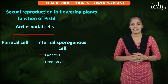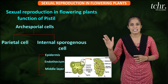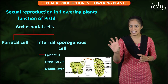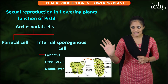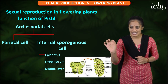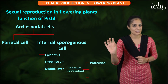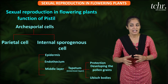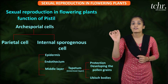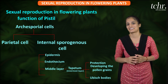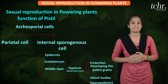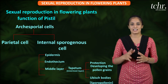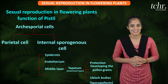The third layer is the middle layer, which is multi-layered — one to six layers — and is nutritive in nature. The innermost layer surrounding the sporangium is called the tapetum. The tapetum is very important: it protects, nourishes the developing pollen grains, and contains Ubisch bodies that are responsible for forming the external layer of the pollen grain. It releases sporopollein, an extremely strong chemical that no digestive enzyme can degrade. The tapetum also has a multi-nucleate and polyploid condition.